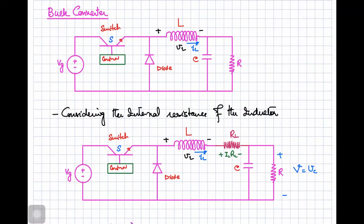In this video we will discuss the model of the buck converter using transformers. The circuit diagram of the buck converter consists of the switch, the diode, inductance, capacitance, load resistance, and the DC source.